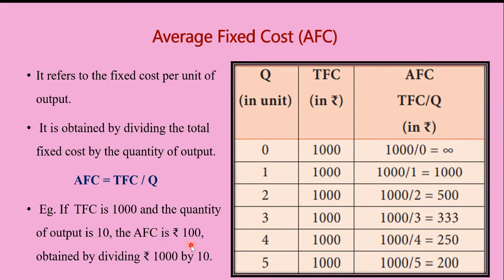Looking at the table: quantity is given as 0, 1, 2, 3, 4, and 5. The total fixed cost for producing any quantity — zero, one, two, three — is always 1000. Even if the output is zero, the total fixed cost remains 1000; it is a constant. AFC is calculated as TFC / Q: 1000/0 = infinity, 1000/1 = 1000, 1000/2 = 500, 1000/3 = 333.33, 1000/4 = 250, and 1000/5 = 200.